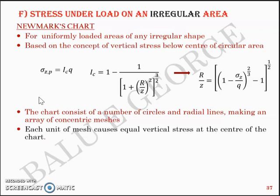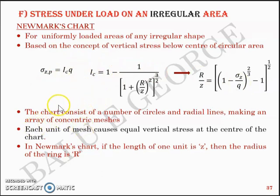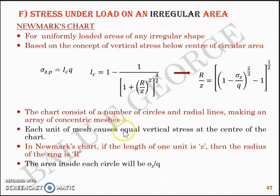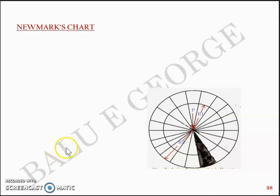Each unit mesh causes equal vertical stress at the center of the chart. In Newmark's chart, the length of one unit is Z and the radius of the ring is R. So the R/Z equation defines the Newmark's chart, and its basis lies in the equation for vertical stress beneath the circular area. The area inside each circle will correspond to σZ/Q — the area inside the first circle is 0.1, the second is 0.2, and so on.